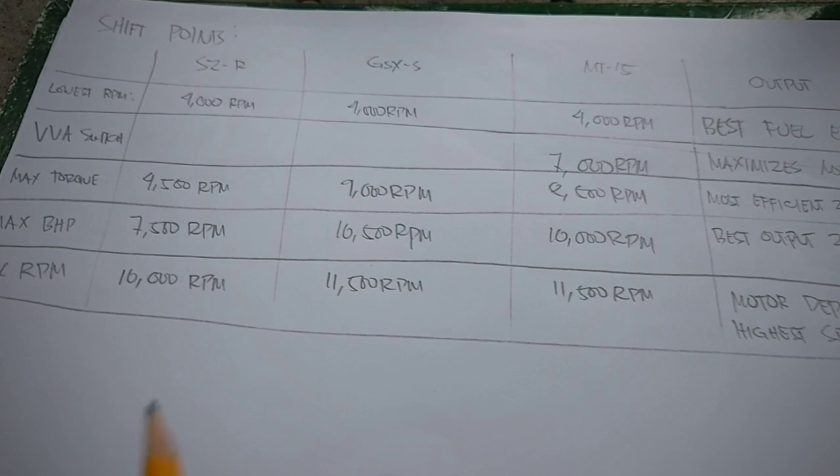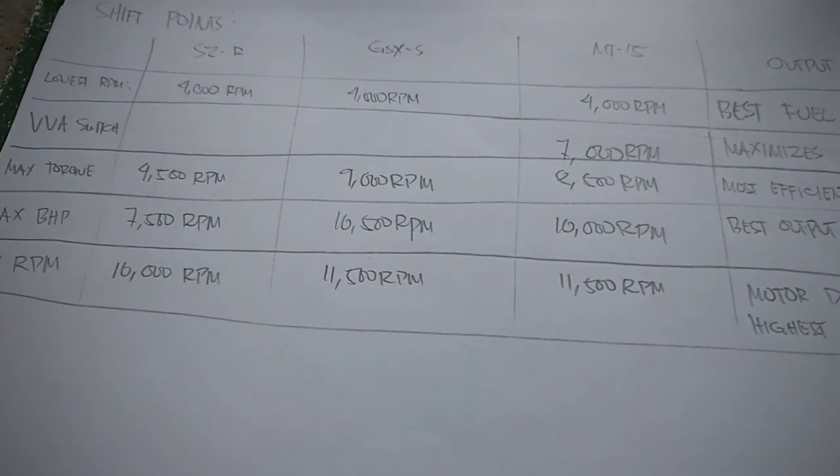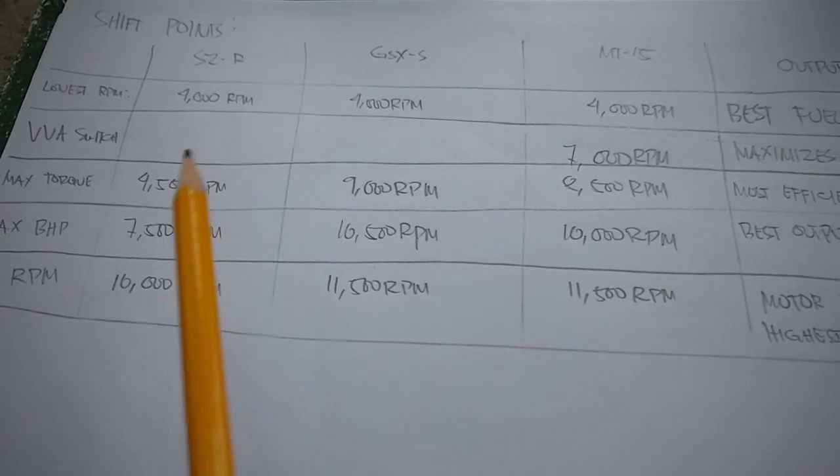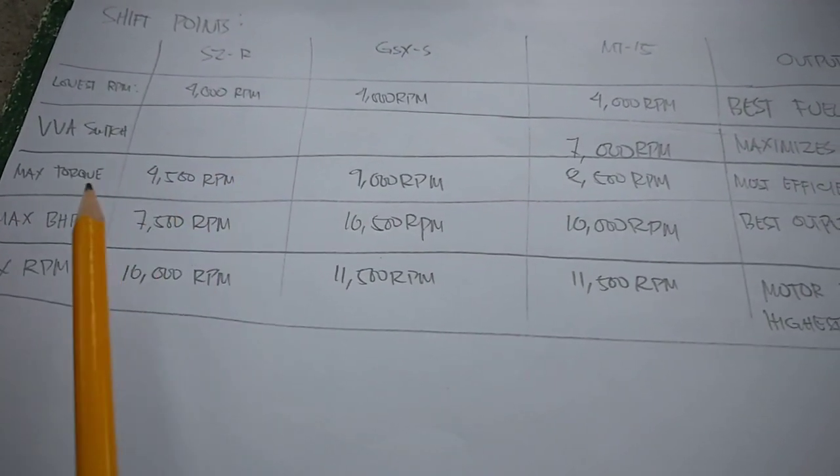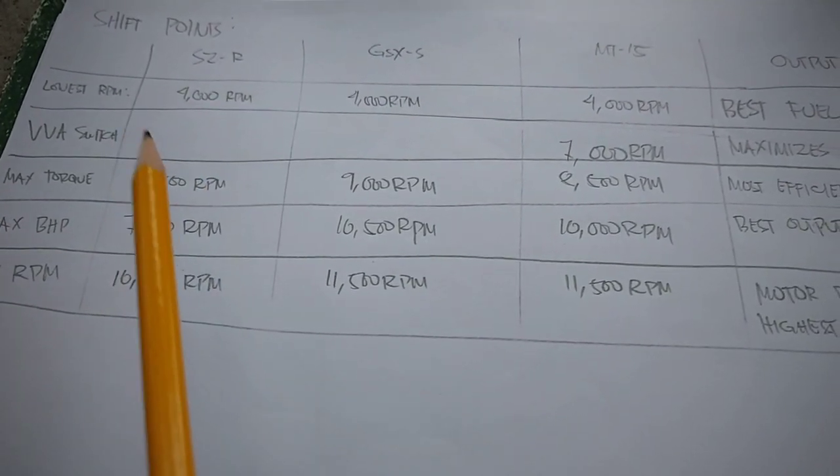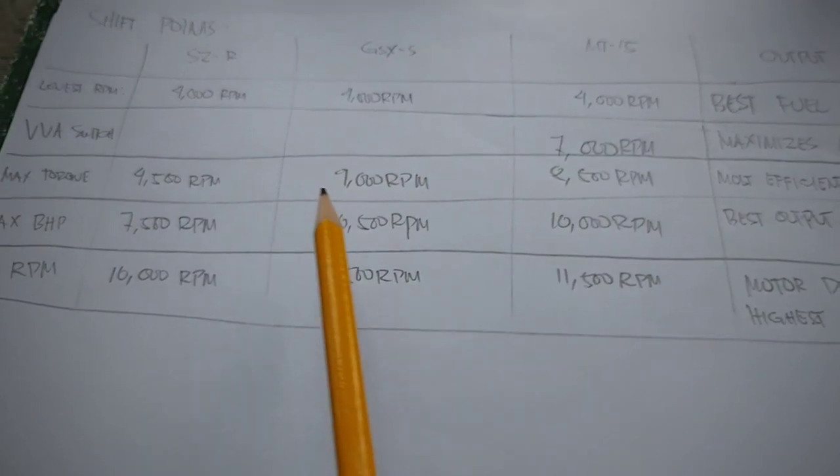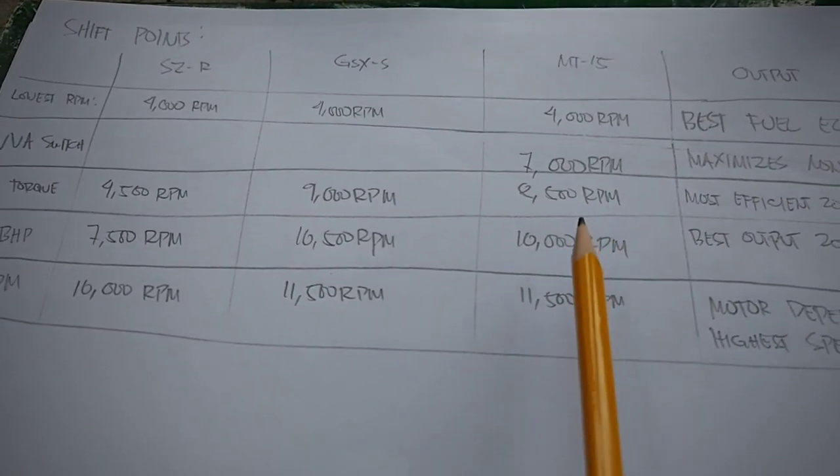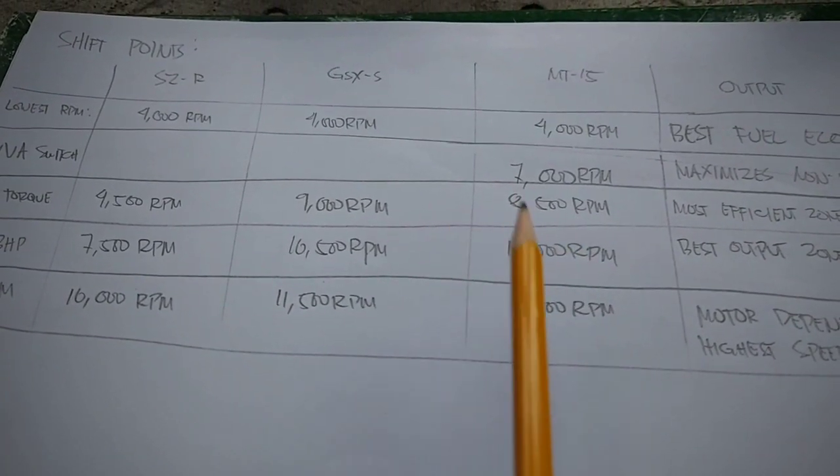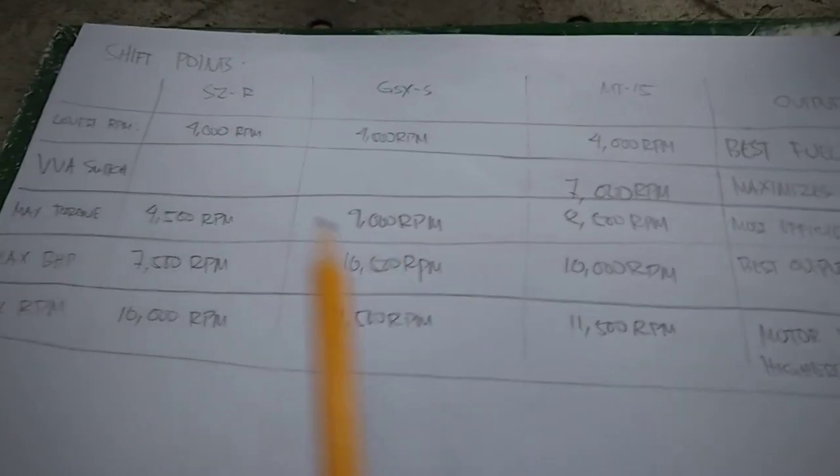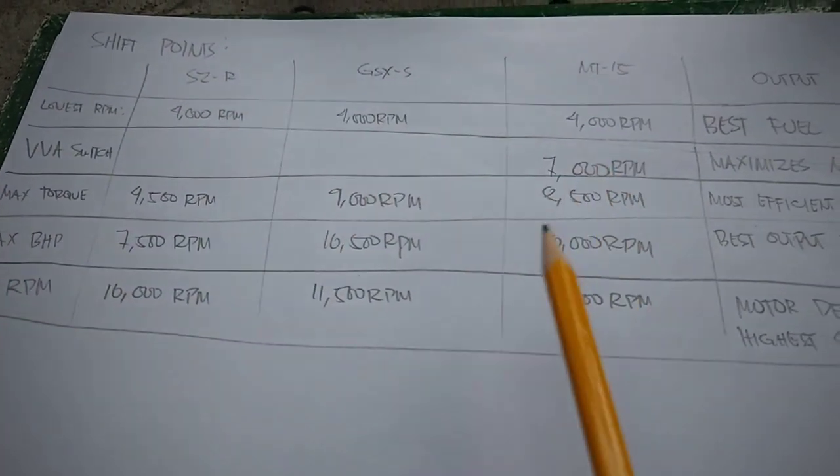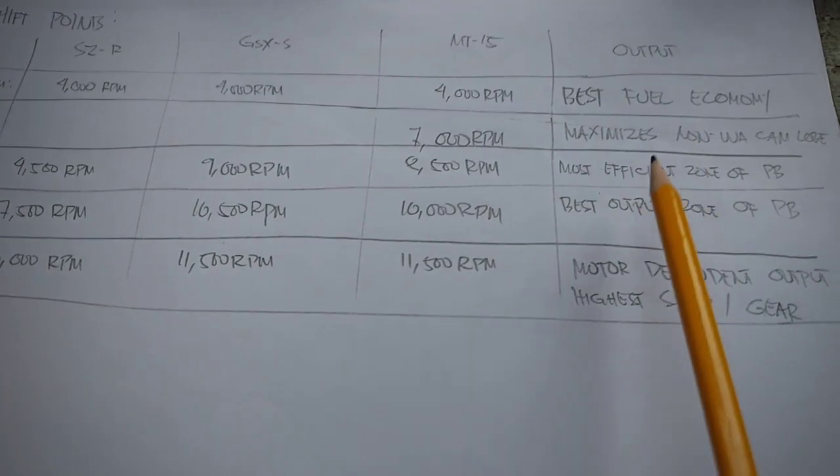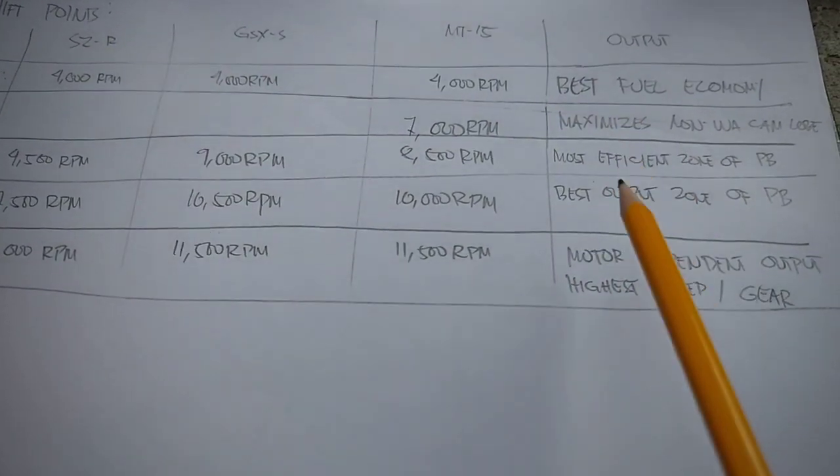Of course, we also have the maximum torque kung kailan ka mag-shift. So sabi ko nga, kagaya kay SZ, at 4,500 RPM maximum torque ka na, pwede ka na mag-shift to maximize yung fuel consumption ng motor mo. Whereas kay GSX, antayin mo pang mag-9,000, and somehow kay MT-15, you get to shift just around 8,500 RPM. So bakit i-consider natin yung max torque?